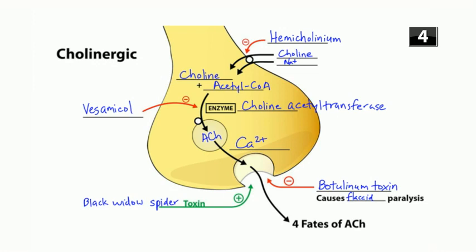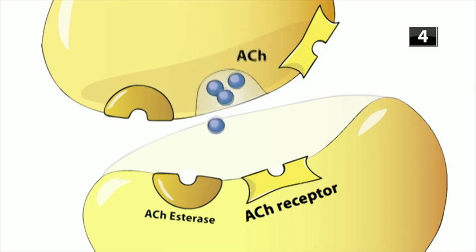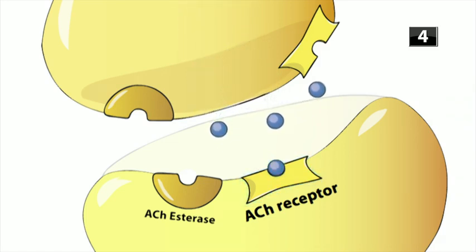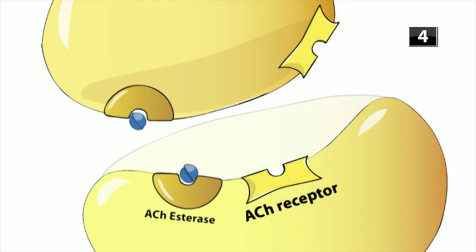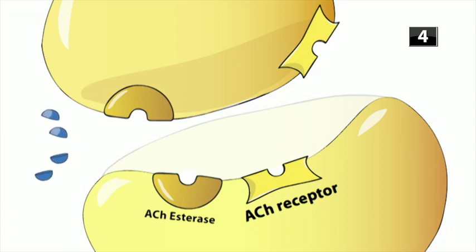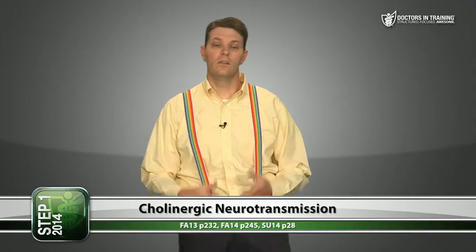After acetylcholine is released into the synaptic cleft, one of four things can happen: it can bind to its postsynaptic receptor; it can bind to an autoreceptor on the presynaptic cell to regulate further release; it can diffuse away from the synaptic cleft; or it can be degraded by acetylcholinesterase, which cleaves acetylcholine into choline and acetate. That choline can be recycled back into the cell via the sodium co-transporter.